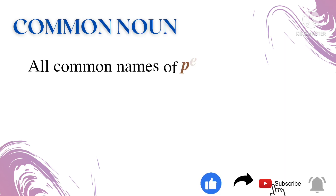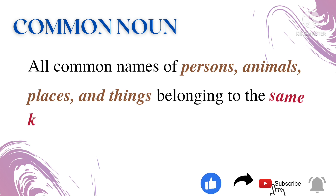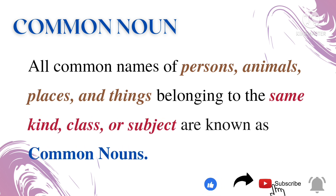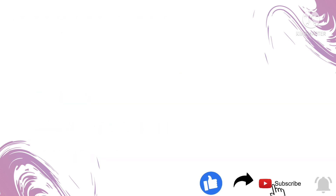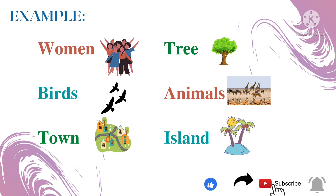Let's start with the common noun. What is the common noun? The title itself tells us the meaning. All common names of persons, animals, places, and things belonging to the same kind, class, or subject are known as common nouns. For example: women, bird, town, tree, animals, and island. Common nouns can be classified into four genders.